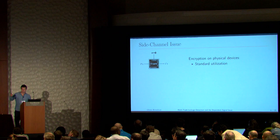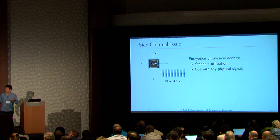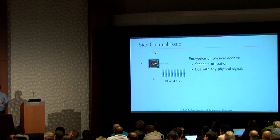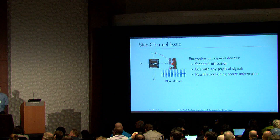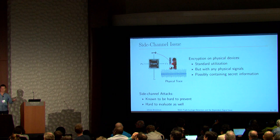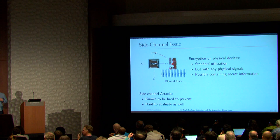The point with side-channel attacks is that when you encrypt data on a physical device, you give plaintext and a key and get a cipher text, but you also get some physical signals — EM, power, time, and so on. The question is: can an engineer get back the key? These side-channel attacks are hard to prevent, and evaluating such devices is also our task.